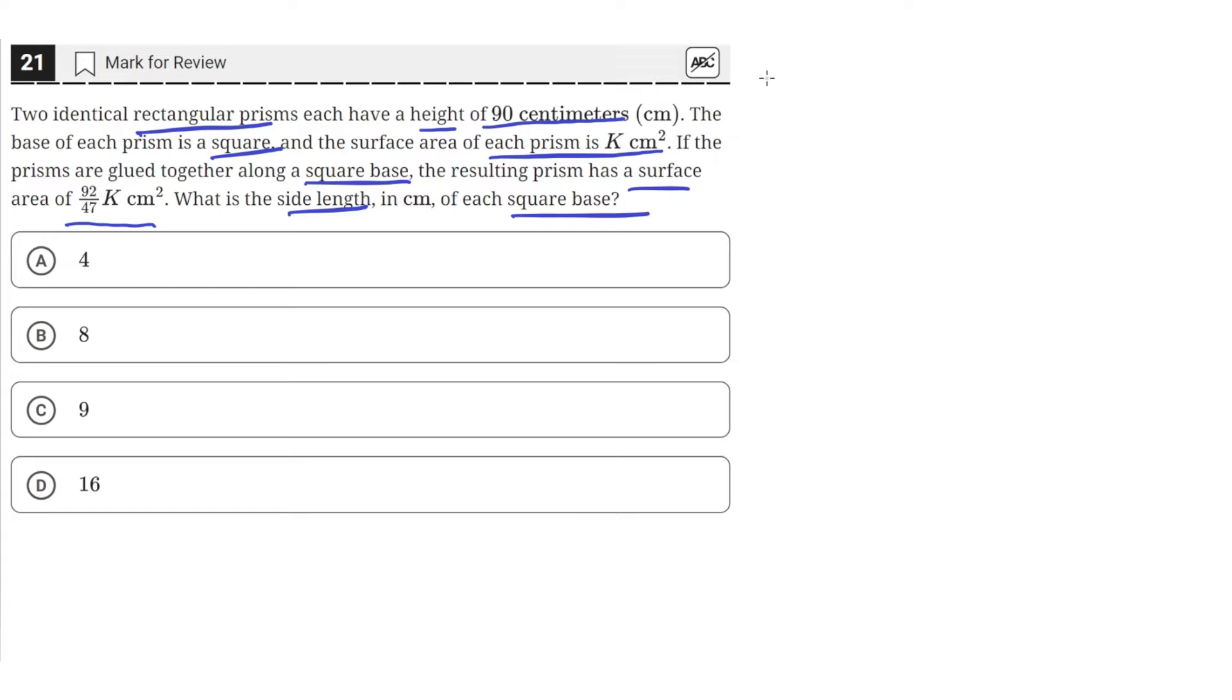There are some rectangular prisms which look something like this. We are given that the base of this rectangular prism is a square, we'll just say it has side length x. And the height of this rectangular prism is 90 cm. Since this rectangular prism has a base of square, it means all of these sides on the base are x.